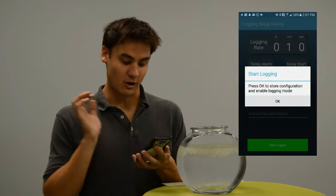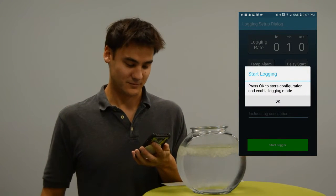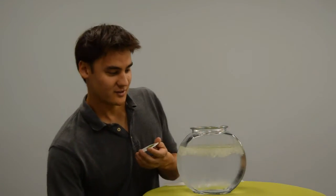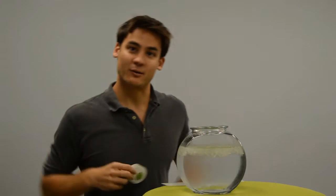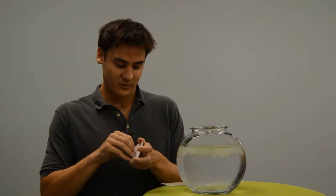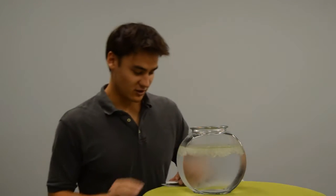Next, I'll hit Start Logger to start the logger. There we go, it's now started. Now to use it, you can either just place the label right in the environment you want to log, or you can peel back the sticky surface and stick it on the object that you want to record.